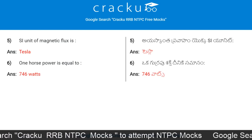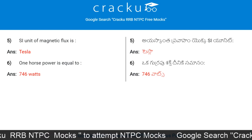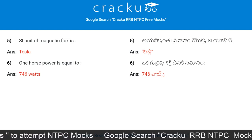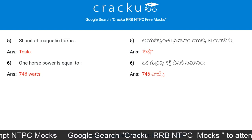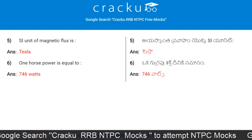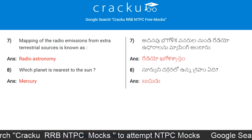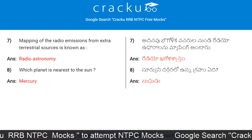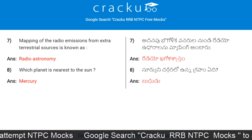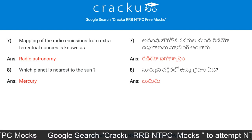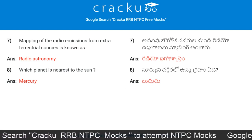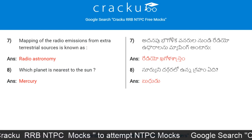The SI unit of magnetic flux is Tesla. One horsepower is equal to 746 watts. Mapping of the radio emissions from extraterrestrial sources is known as radio astronomy. Which planet is nearest to the Sun? Mercury.